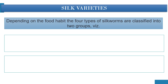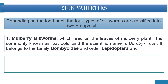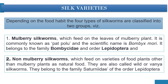Now we will discuss silk varieties. Across the world, we have four varieties of commercial silk, and in India — especially the northeastern region — we have all four varieties. Depending on food habit, the four types of silkworms are classified into two groups: mulberry silkworms, which feed on the leaves of the mulberry plant (commonly known as Patpolu in Assamese, scientific name Bombyx mori, family Bombycidae, order Lepidoptera), and non-mulberry silkworms, which feed on varieties of food plants other than mulberry as natural food.